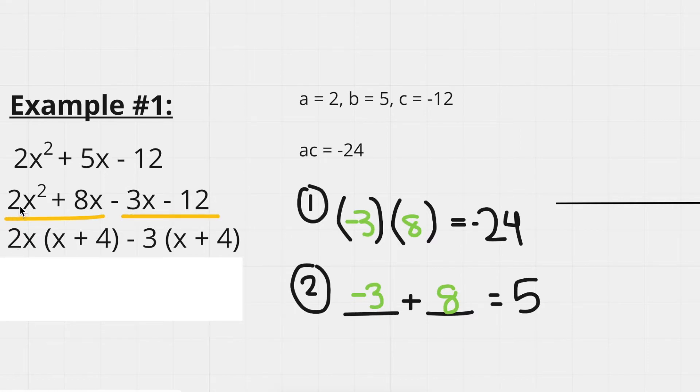Therefore, we were left with 2x times x plus 4, minus 3 times x plus 4. And now you can group these together and group these together to get 2x minus 3, and then x plus 4. So this is the factored form of 2x squared plus 5x minus 12.